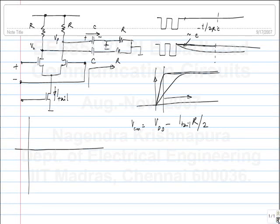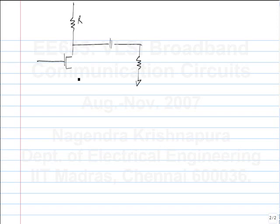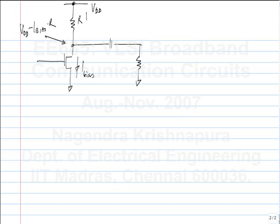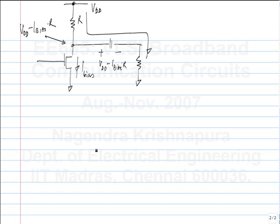We have a common source amplifier, and let us say the quiescent bias current is I_bias. This point is at Vdd minus I_bias times R in the quiescent condition. The assumption is that when you are doing AC coupling, the capacitor will hold this voltage like a battery. If you apply a low enough frequency that assumption will break down, but we are operating in the range where this voltage is held constant.